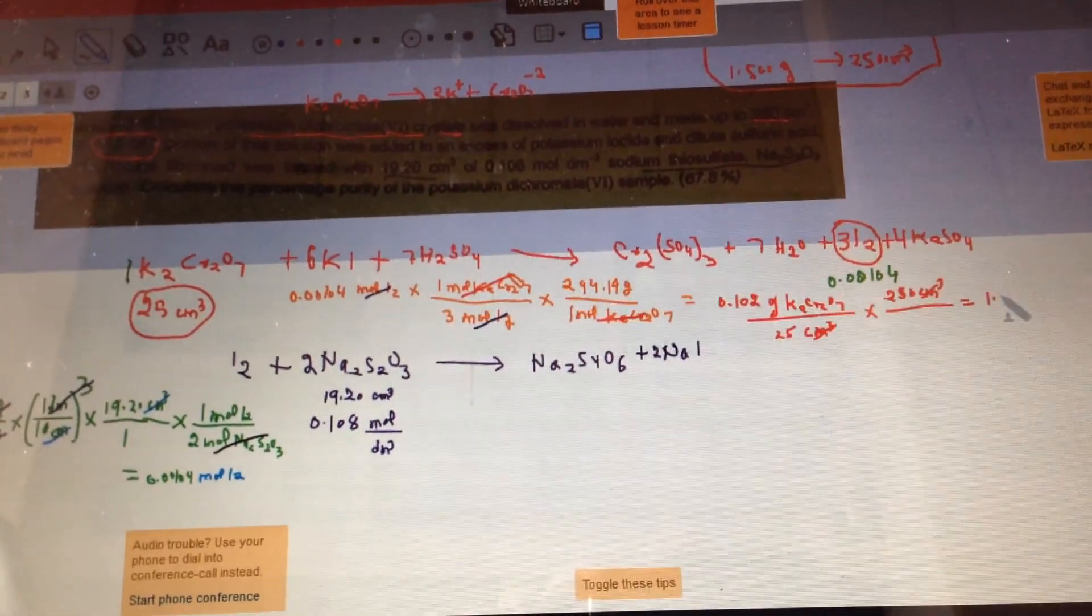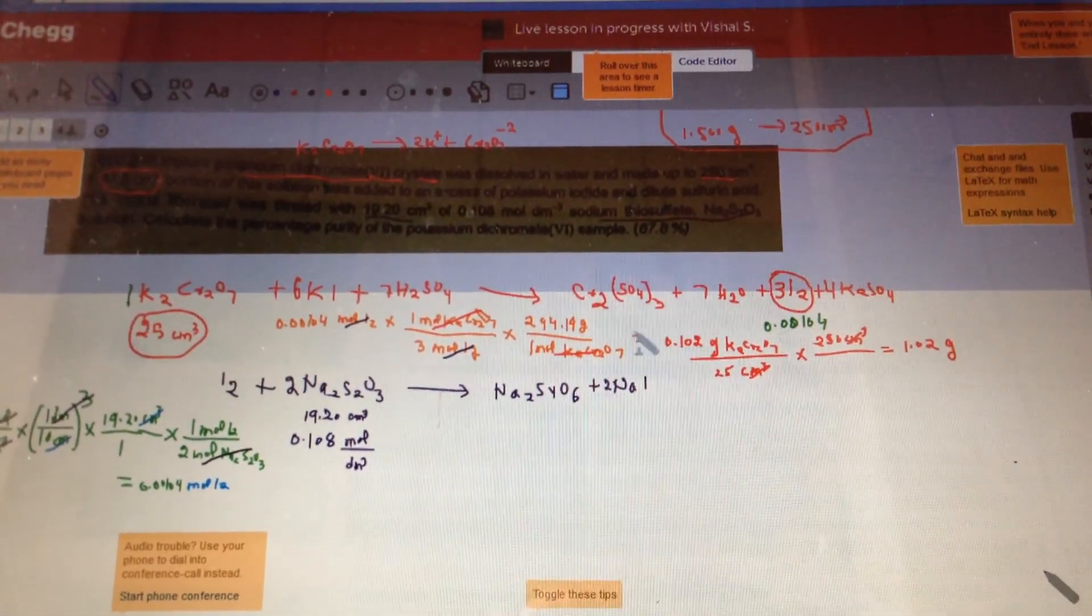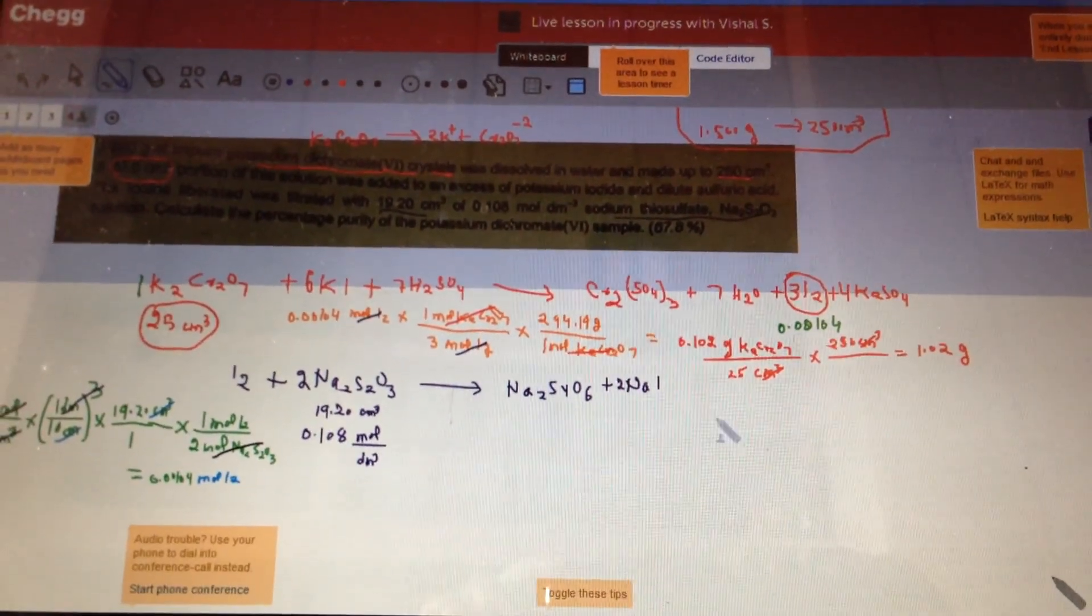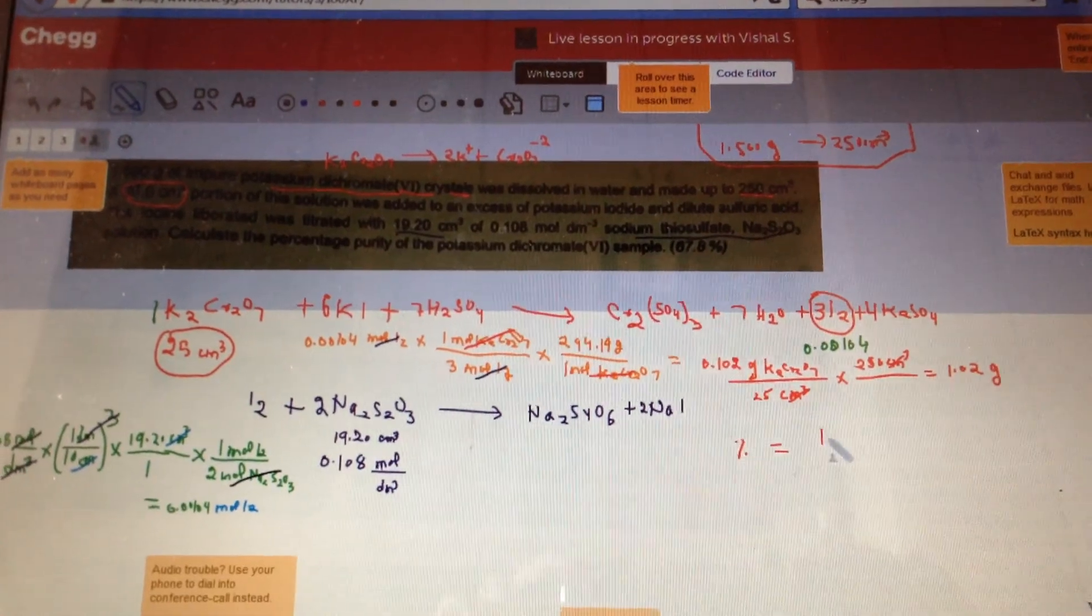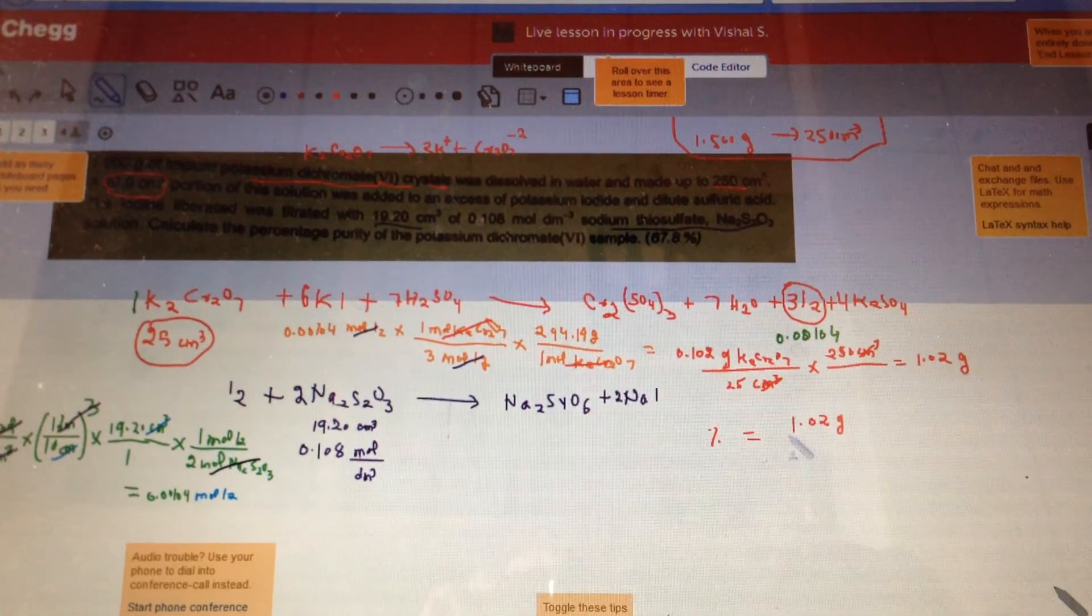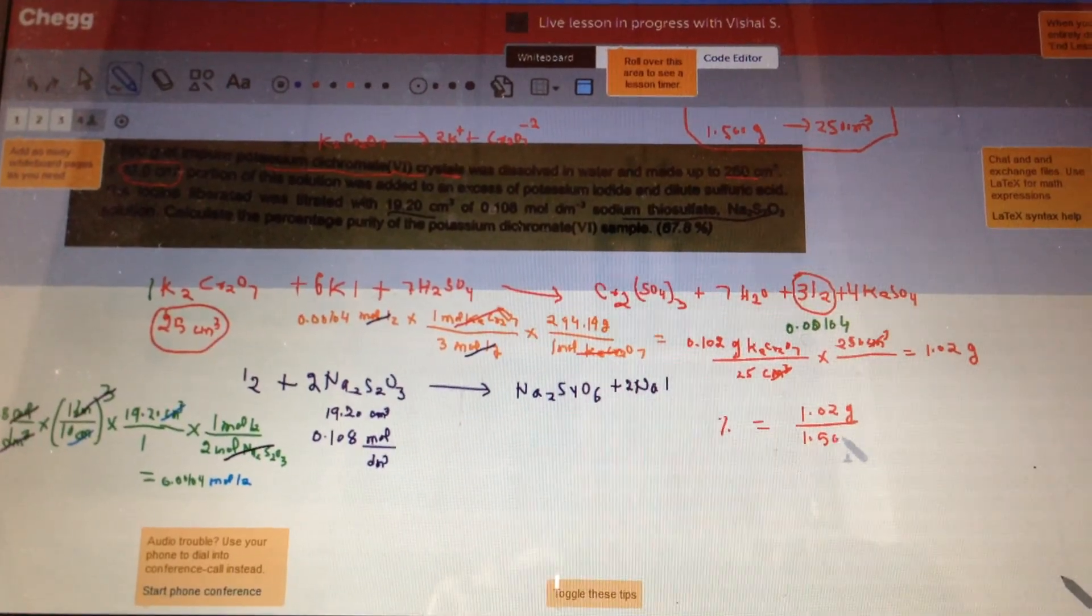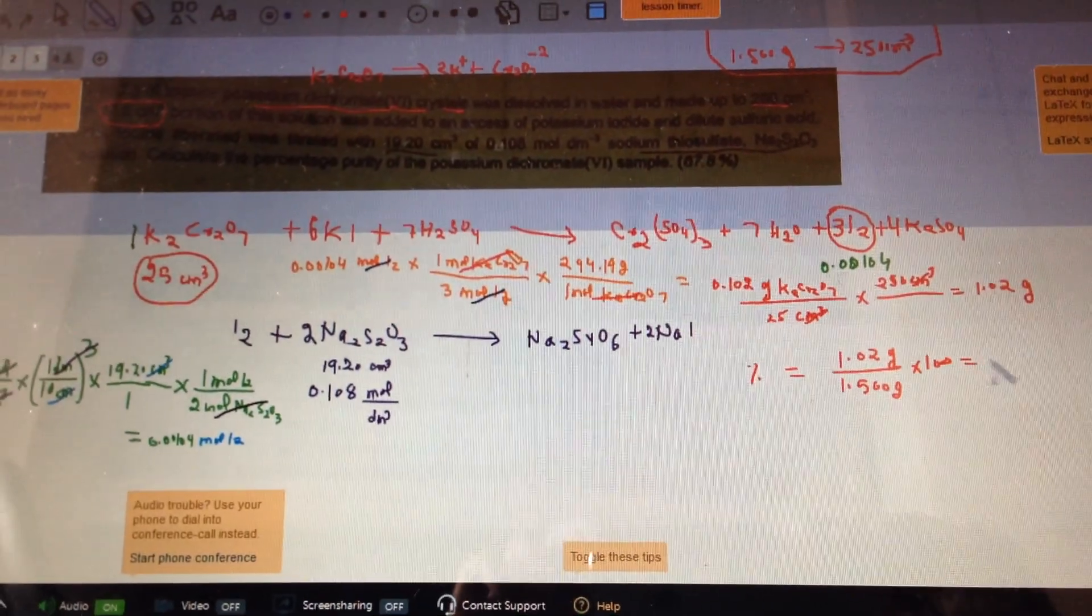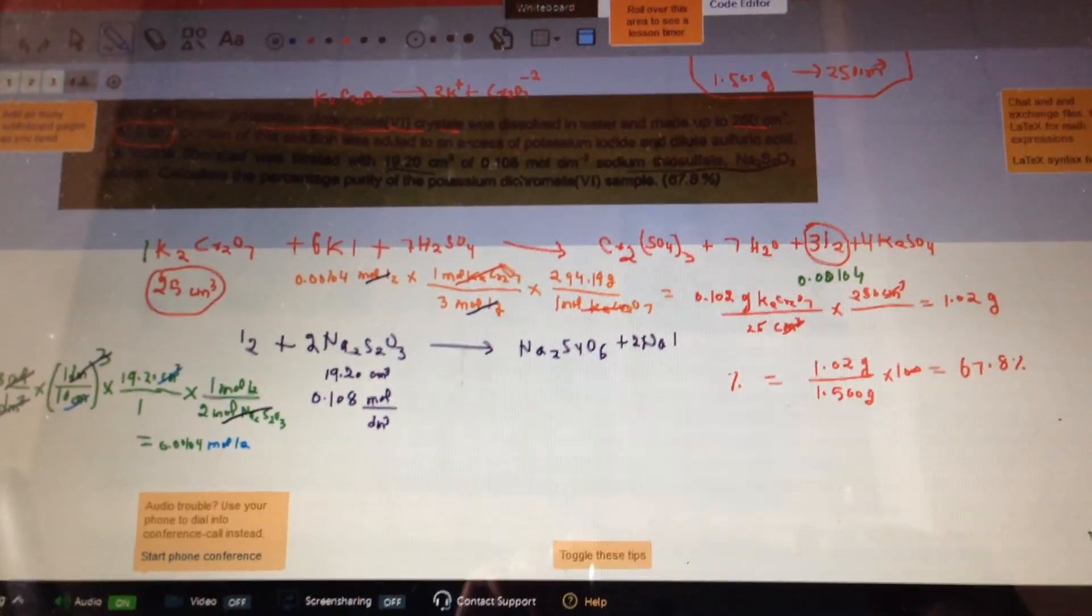Centimeters cubed cancels out here and that's going to be 1.02 after you multiply. So the total amount of potassium dichromate you have in a solution of 250 centimeter cube is 1.02. Now at the end we need to get the percentage purity, and the percentage purity is going to be the amount of potassium dichromate which is 1.02 divided by 1.500 grams times 100, so that comes out to be 67.8 percent.